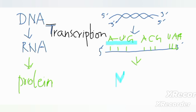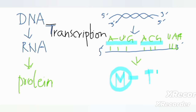Here you can see AUG — the first triplet of bases is a start codon that codes for the amino acid methionine, and this codon is present at the beginning of all sequences that code for an amino acid chain. The next triplet is ACG, which codes for threonine. Next is UAA, which is a stop codon. Stop codons are UAG, UGA, and UAA.